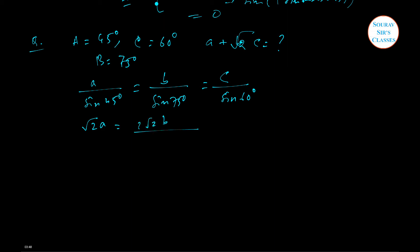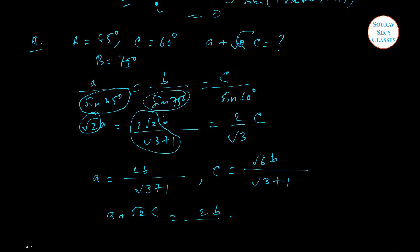So here if you put the values, this is root 2 a by 2, 2 root b by root 3 plus 1, and root 3 by 2. This sine 45 is root 2 over 2, and sine 75 is this entire value. In this case we can find the value. Our target is to find a and c with respect to b or a and b with respect to c. Keep one thing as your subject. You'll get root 6 b over root 3 plus 1, so root 2 c equals 2 b.